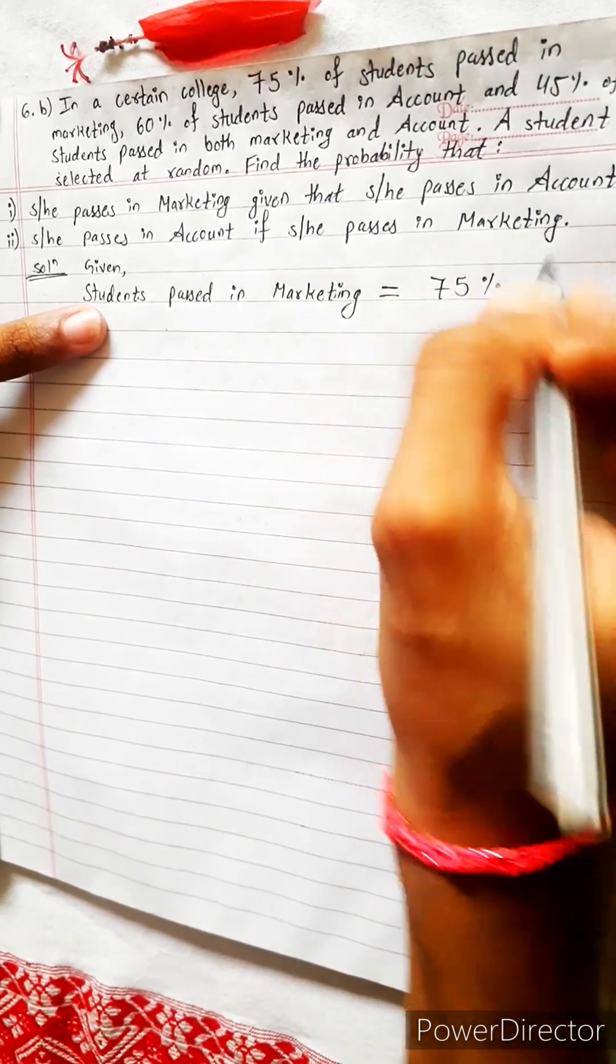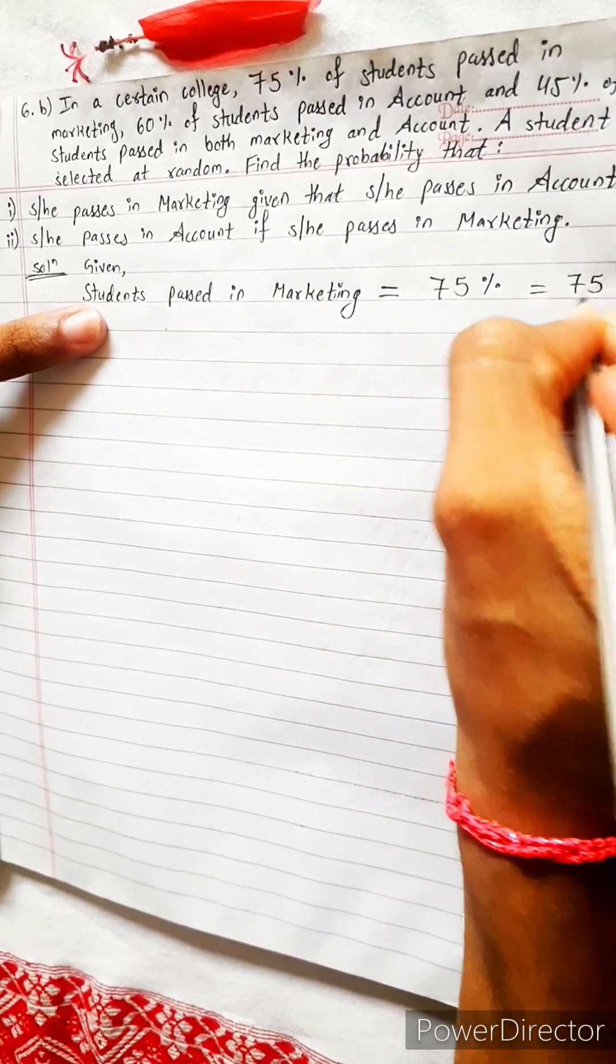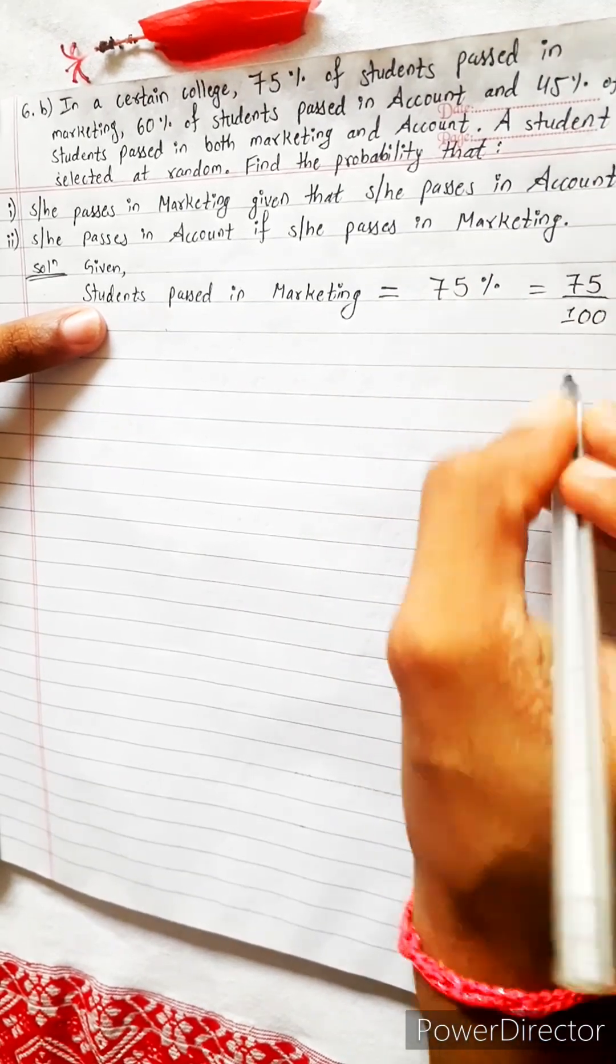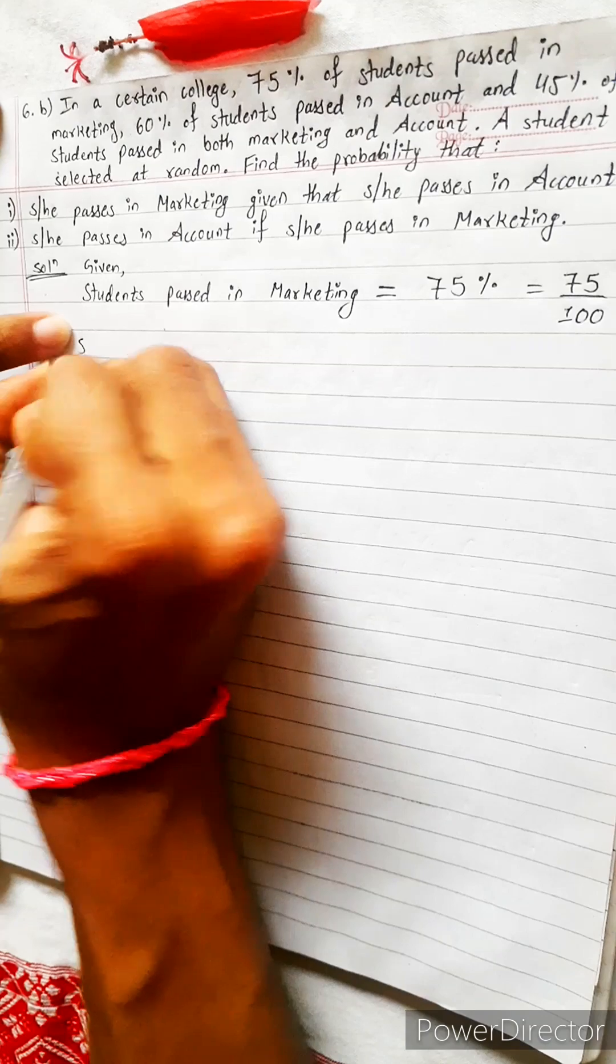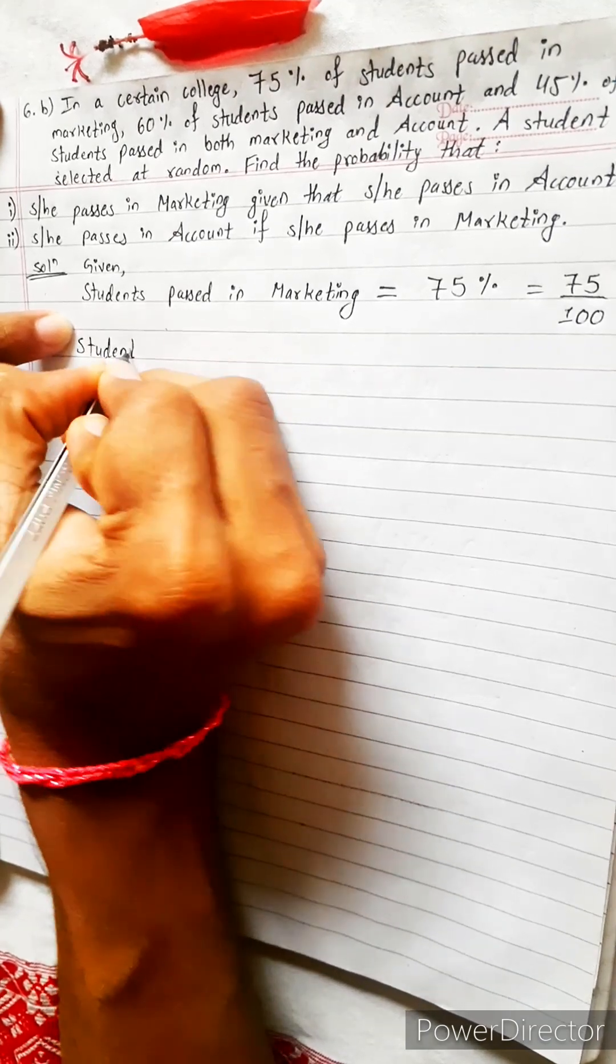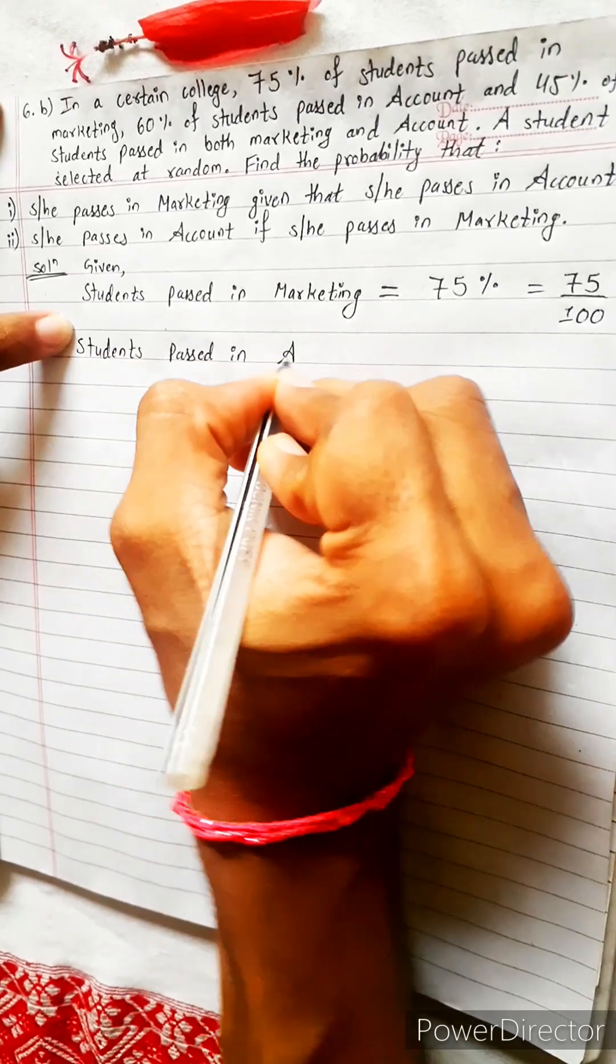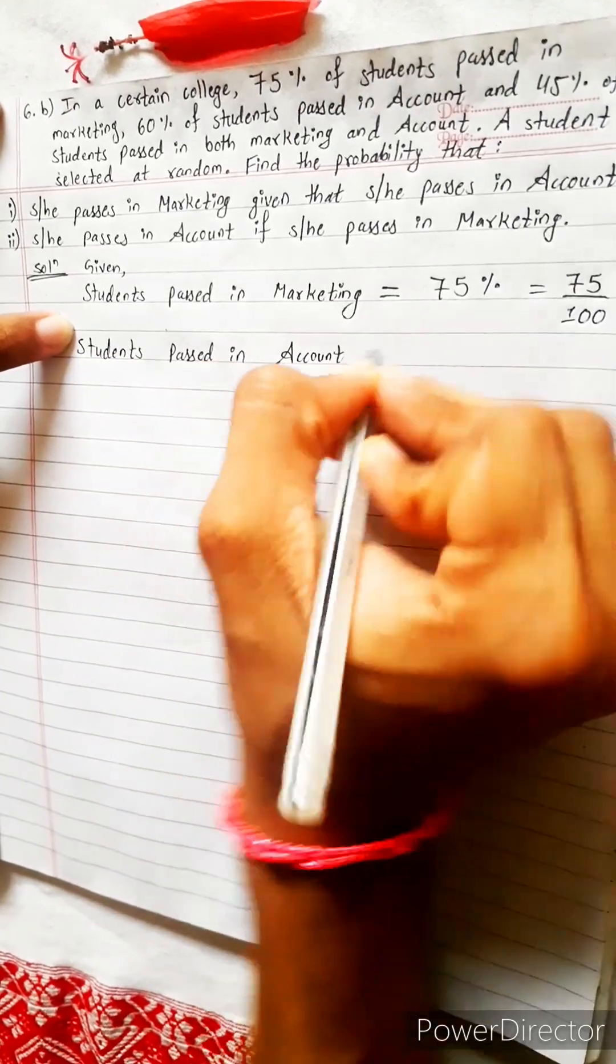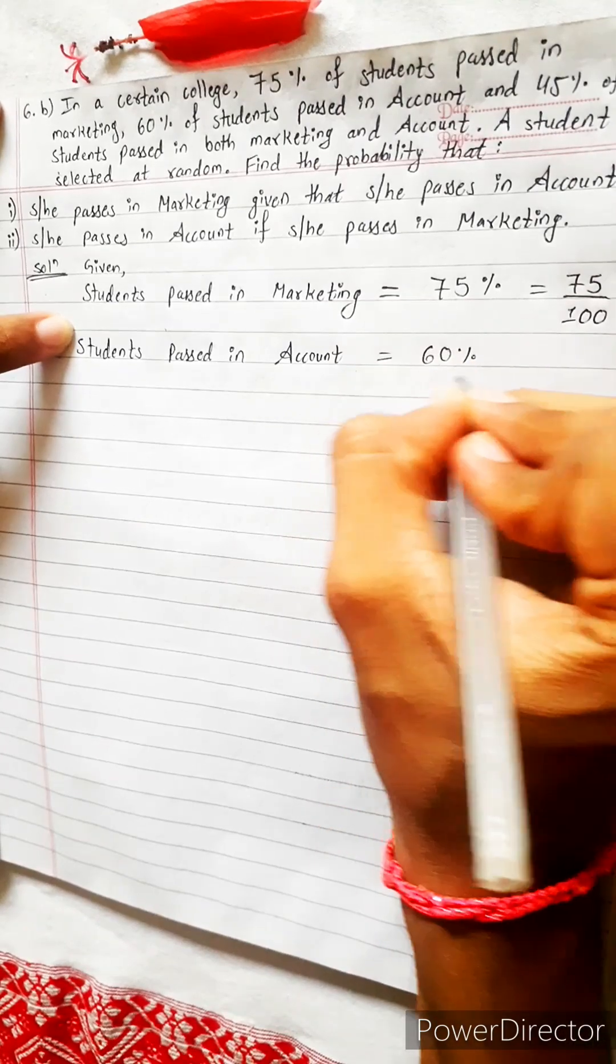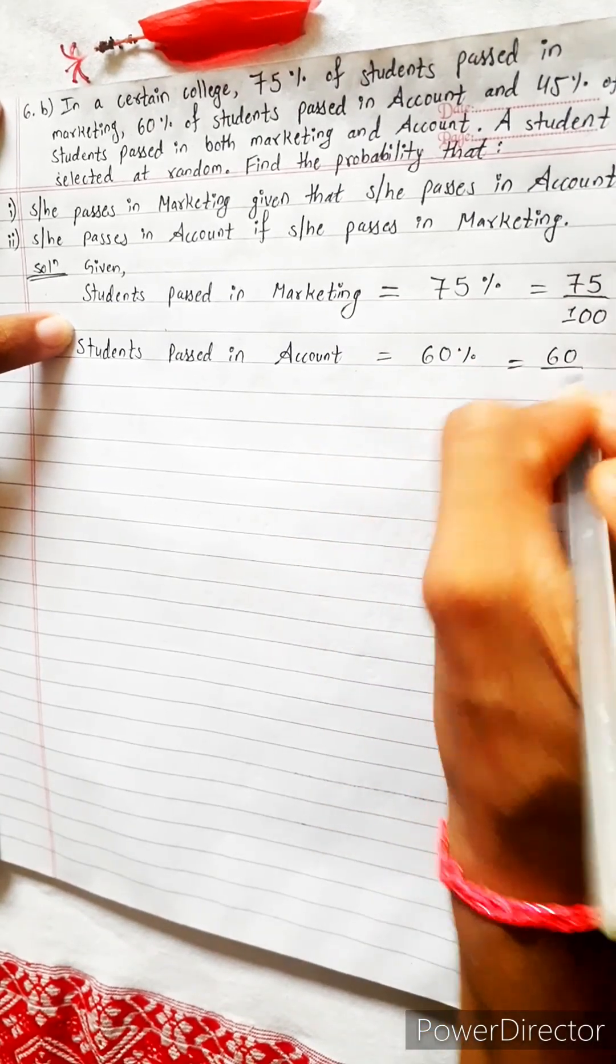75% - percent means out of 100, so 75 by 100. Now again, students who passed in subject account is also given: 60%, which means 60 out of 100.